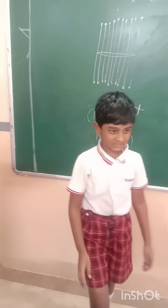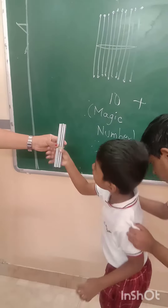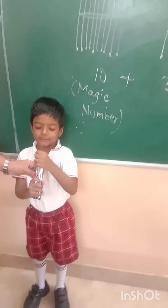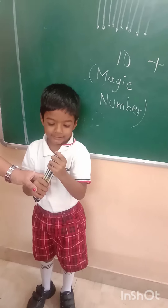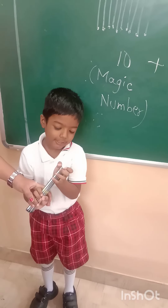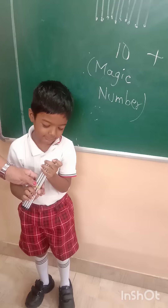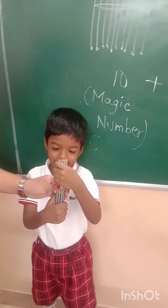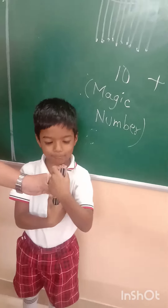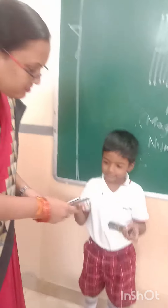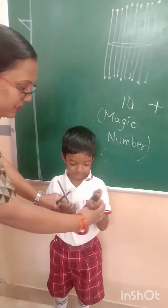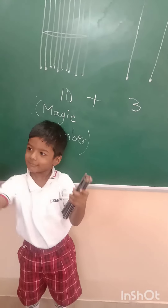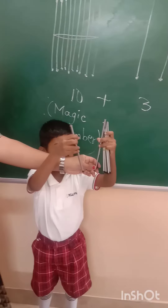Come, Kunal, show me now. What is this? How many pencils are there? Count — 1, 2, 3, 4, 5, 6, 7, 8, 9, 10. What is 10? 10 is magic number. Now show me 11. 10, 11. Now 12 — 10, 11, 12.